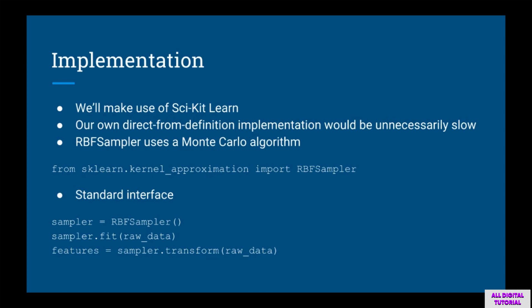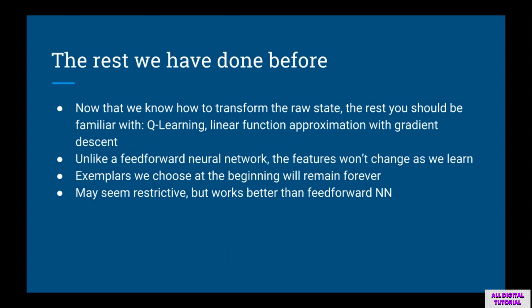We won't write our own RBF kernel transformation code since scikit-learn already has this. The scikit-learn implementation is called RBFSampler, which implements a Monte Carlo algorithm for faster computation. As usual, we create an instance, call the fit function, and then call transform. We pass the features into a linear regression model and use gradient descent to update parameters. Unlike a feed-forward neural network, the features don't change as we learn — the exemplars we chose at the beginning remain the same forever. Although this might seem restrictive, it actually works better than plain stochastic backpropagation through the whole network.